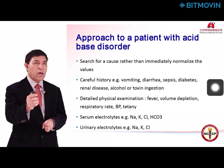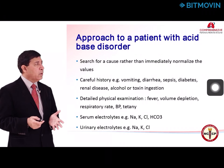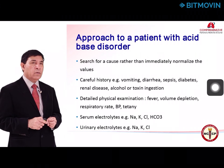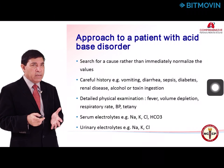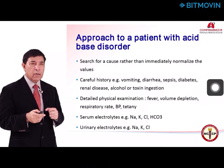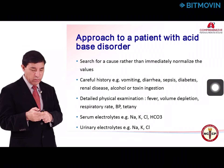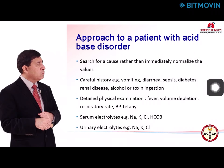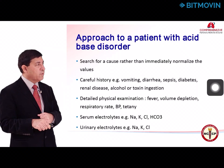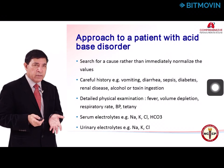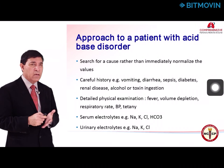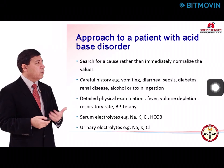To approach a patient with acid-base disorder systematically, the first thing is to search for a cause rather than immediately normalizing values — do not have a knee-jerk reaction. Try to understand the pathophysiological mechanism; if you treat the underlying cause, the acid-base abnormality automatically corrects. Look for history suggesting a particular disorder: vomiting indicates metabolic alkalosis, diarrhea indicates normal anion gap metabolic acidosis, sepsis or diabetes indicates wide anion gap metabolic acidosis.